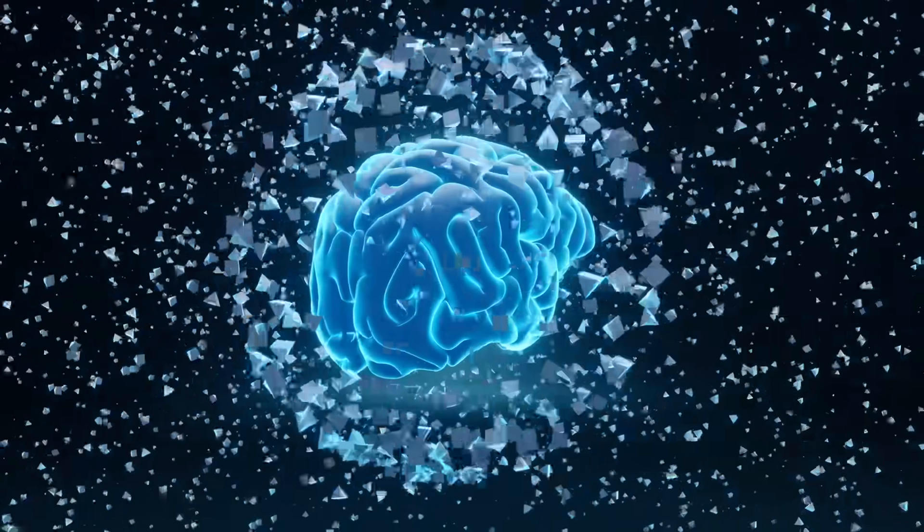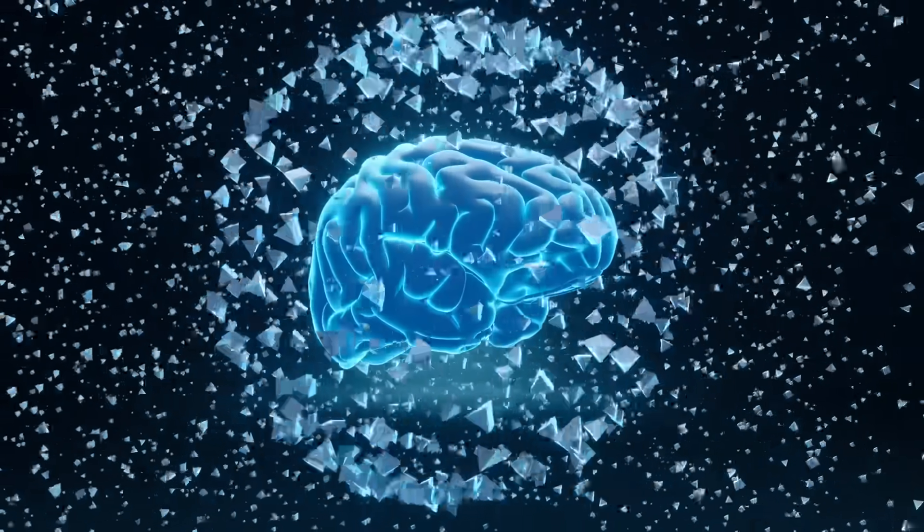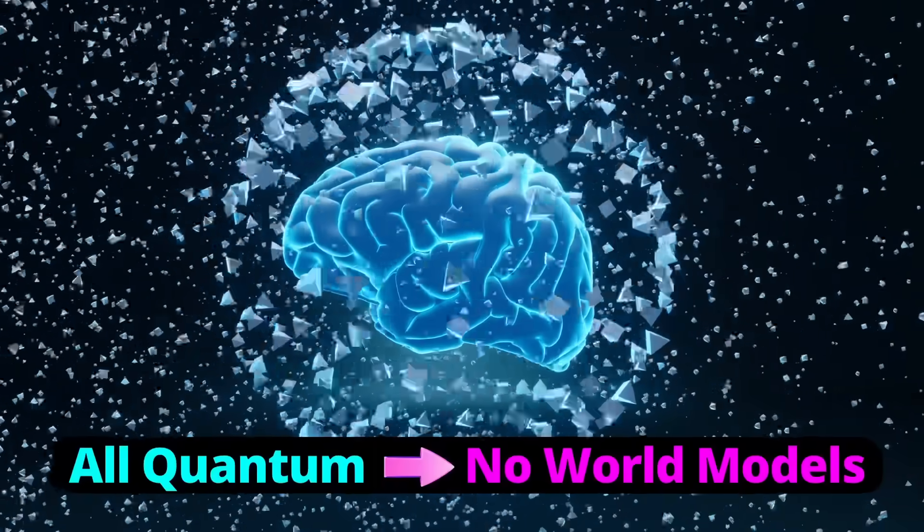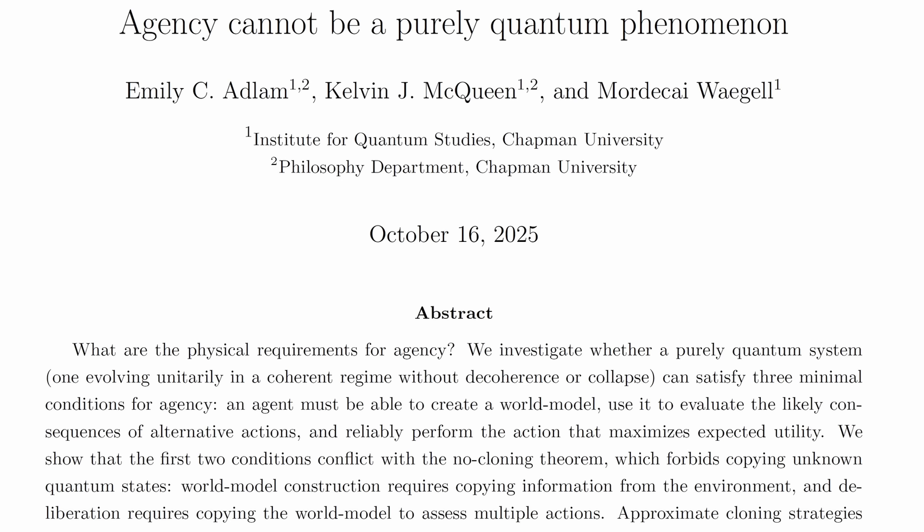So, the authors say, if our environment has only quantum properties and the human brain has only quantum properties too, then humans can't make models of their environment. They don't have a world model, as the authors put it.